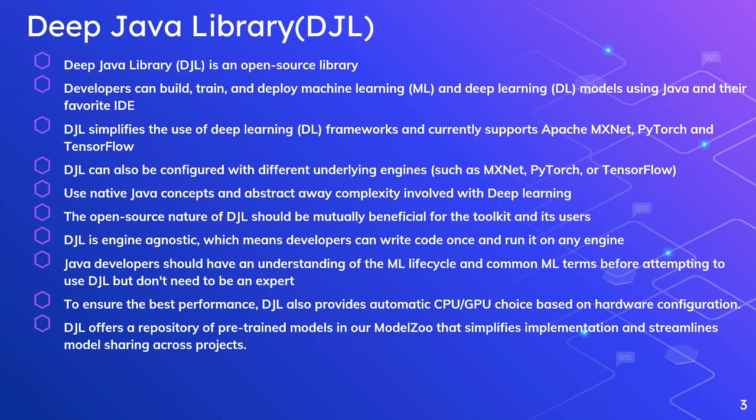To ensure the best performance, DJL also provides automatic CPU/GPU selection based on hardware configuration. It will automatically identify which CPU or GPU you are running on and function accordingly. DJL also offers a repository of pre-trained models in its Model Zoo, which you can use directly in your project.